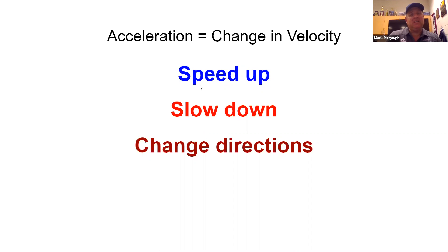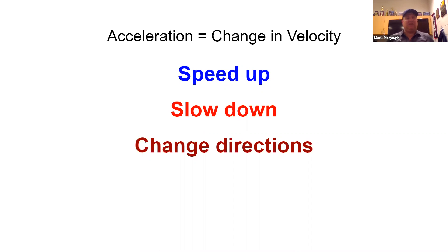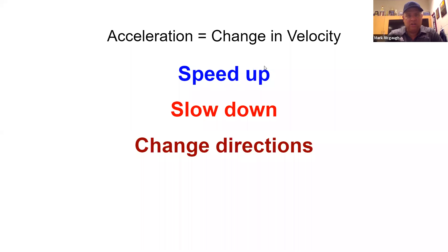Since speed and direction is what defines velocity, acceleration is simply a change in velocity — they mean the same thing. Velocity is the speed you're going and what direction you're going. So if you do any one of these things, you've changed your velocity, and that's an acceleration.